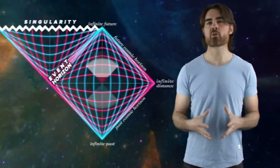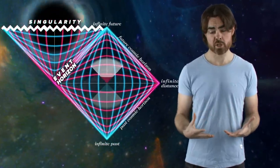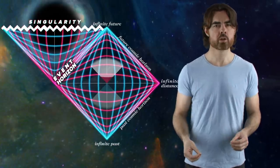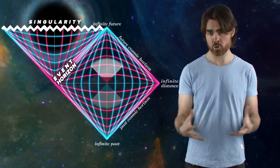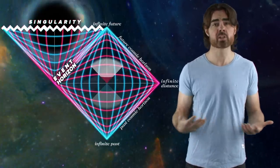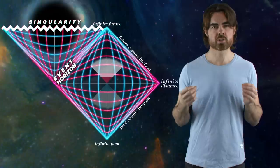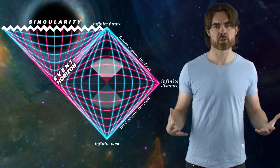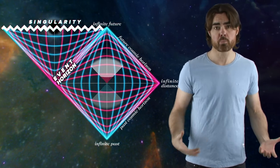The Penrose Diagram we looked at represents a Schwarzschild black hole. So no electric charge and no rotation, but also an eternal black hole. It always existed, never growing, never leaking. Of course, there is no such thing. At the very least, even a Schwarzschild black hole must have formed at some point.